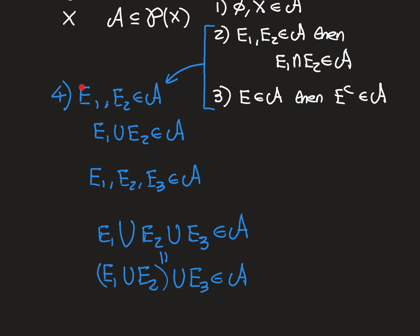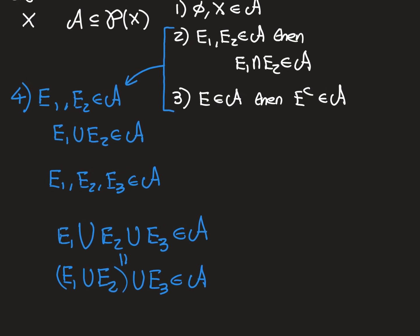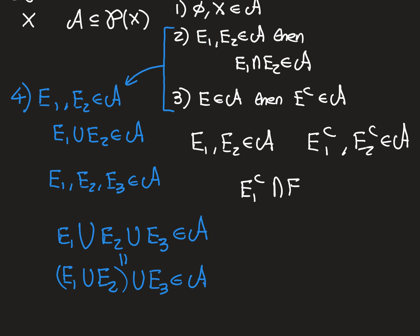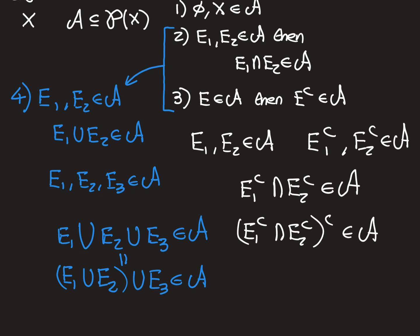What we need to show is that properties two and three together imply that closure under union is true. So: if it's closed under intersection and closed under complements, then it is also closed under unions. Take two elements e1 and e2 in the algebra. Properties two and three hold true, and we want to show e1 union e2 is also in the algebra. Because e1 is in the algebra, e1 complement is in the algebra; and because e2 is in the algebra, e2 complement is in the algebra. Then we intersect e1 complement with e2 complement — since both are in the algebra, their intersection is in the algebra. Then taking the complement of that, e1 complement intersect e2 complement, all complemented, is also in the algebra because the algebra is closed under complement.